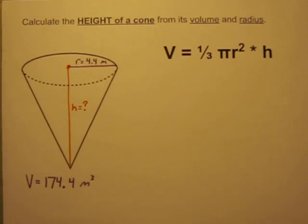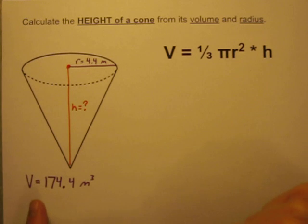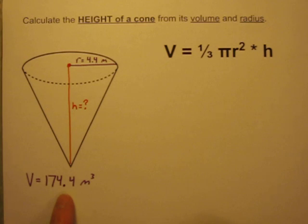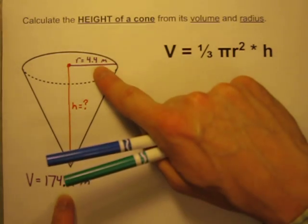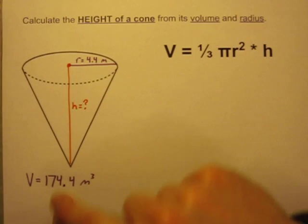When working with 3D shapes, you are often asked to calculate the volume of that shape. You'll be given some measurements and asked to use the formula to calculate the volume. But sometimes you'll be asked to go backwards — like in this problem, where you're told the volume of this cone is 174.4 cubic meters and the radius is 4.4 meters. What would the height have to be?